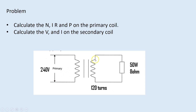Given the problem, we need to calculate: the number of turns on the primary, the current on the primary, the resistance on the primary, and the power on the primary coil. On the secondary coil, we already have the watts, ohms, and number of turns. What we're looking for on the secondary coil is the voltage and the current.